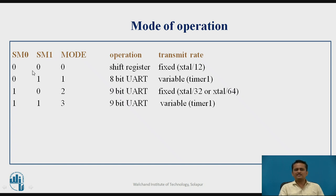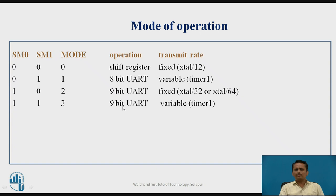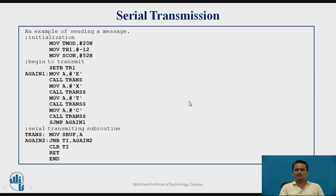When SM0 and SM1 are both 0, it is Mode 0 — a shift register mode that can be used to expand the port capability of the microcontroller by connecting a shift register to the serial communication pins to obtain parallel data output. Mode 1 is 8-bit data transmission with a variable baud rate. Mode 2 uses 9-bit data transmission with a fixed baud rate. Mode 3 also uses 9-bit data transmission but with a variable baud rate, determined by the same formula used for Mode 1.